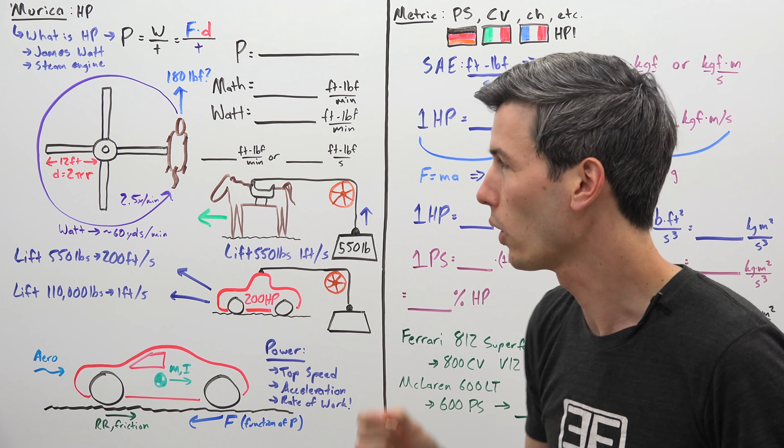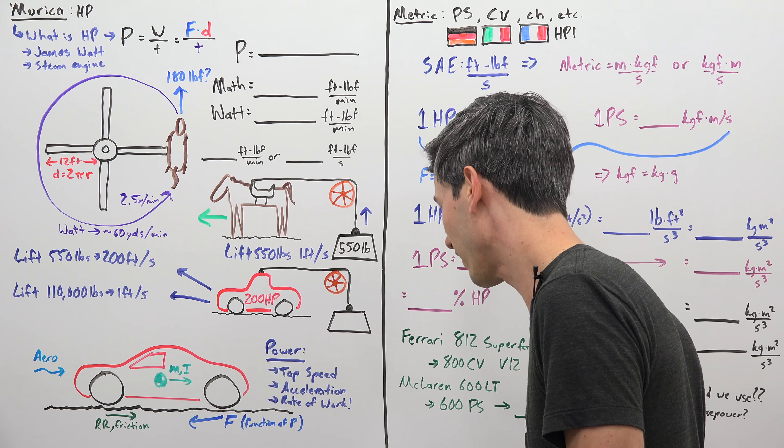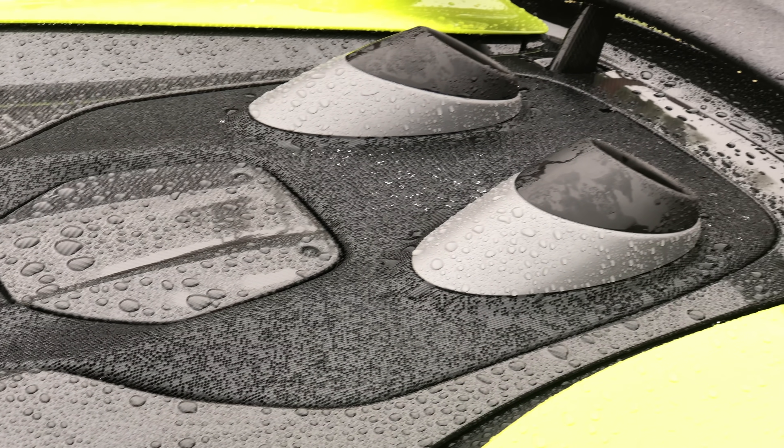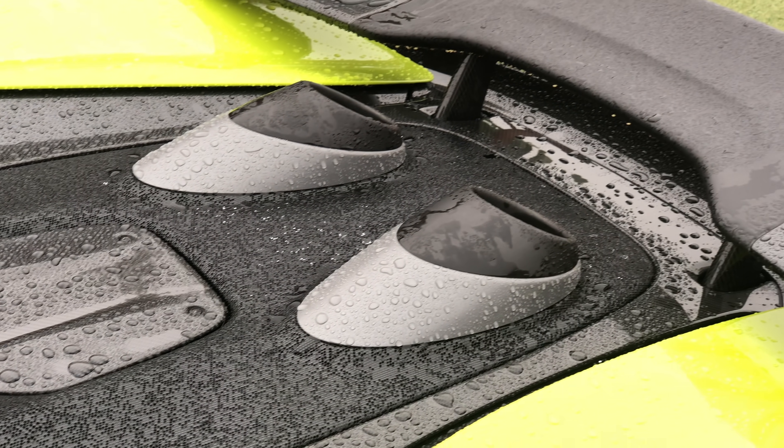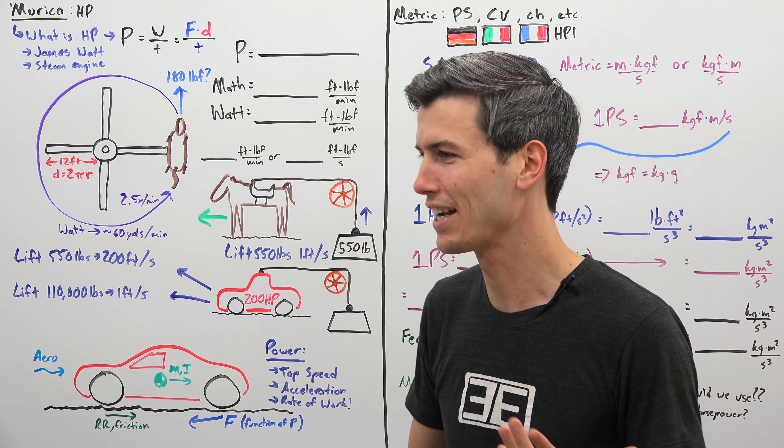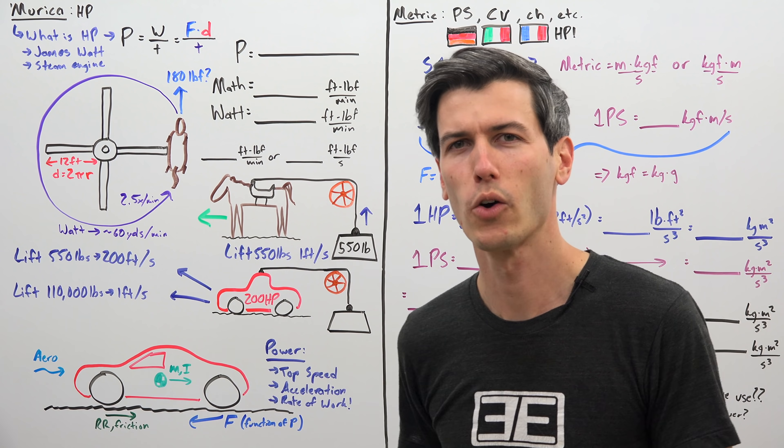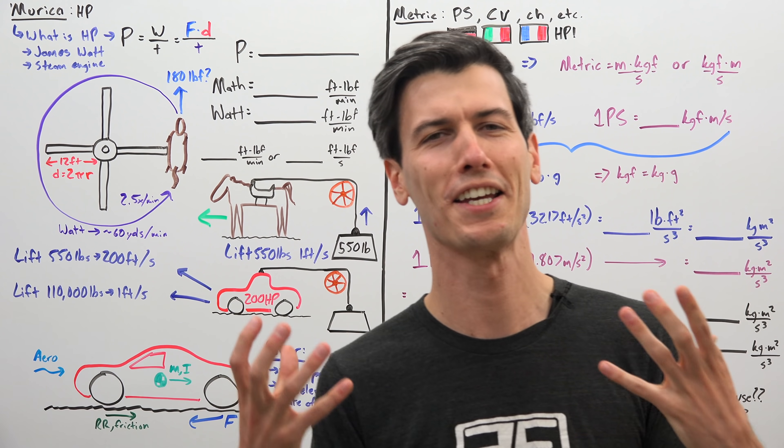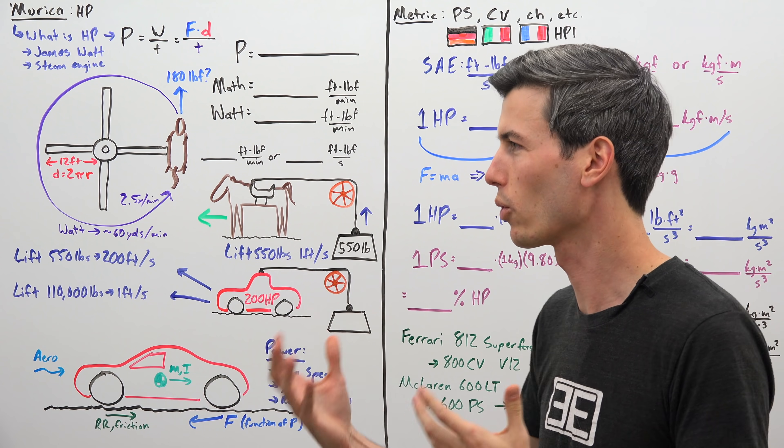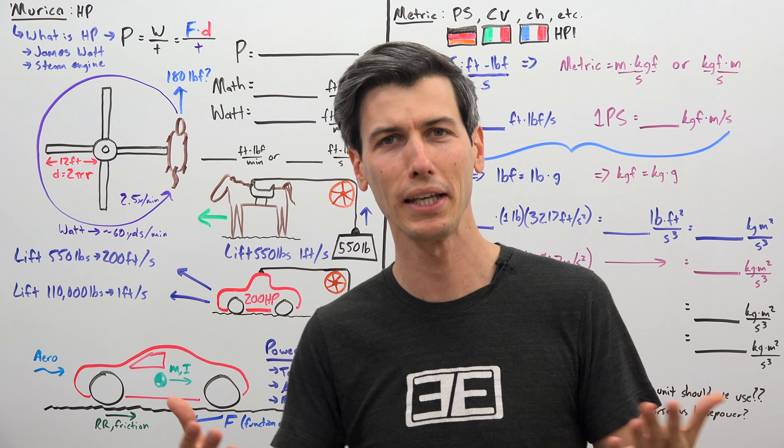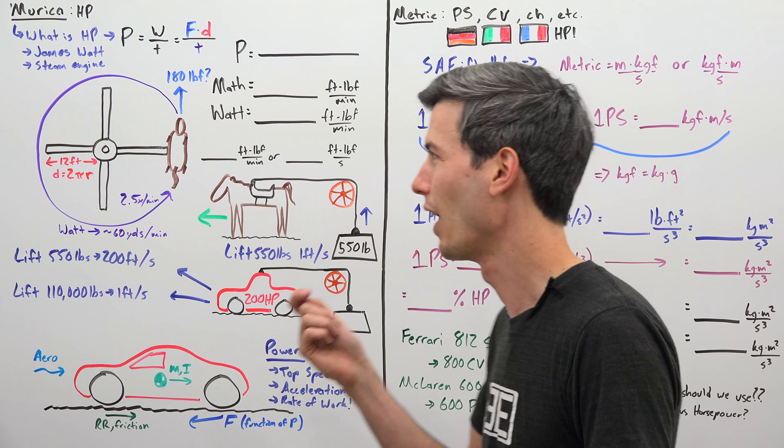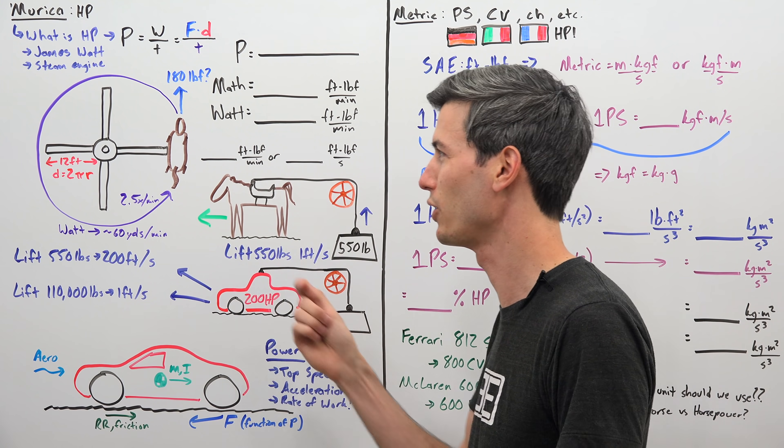Now we want to know what is the unit horsepower? And so this is a unit developed by James Watt. Now James Watt is known for his steam engine, and so his steam engine was often replacing horses which were doing the work. And so he wanted to be able to communicate, okay what can my engine do? How many horses can my engine replace? And so he needed to come up with a unit in order to make that comparison, that unit being horsepower.